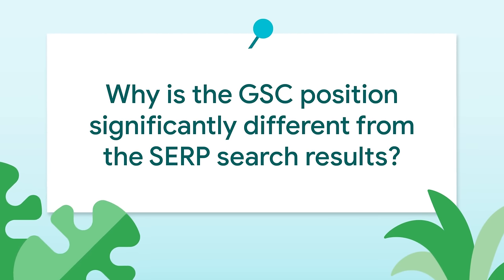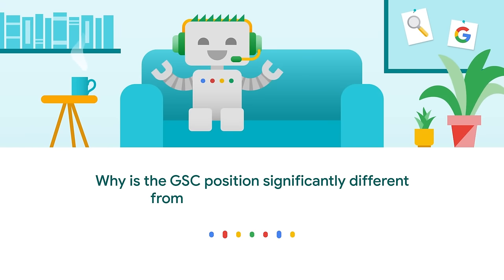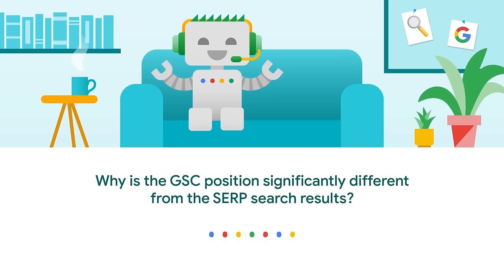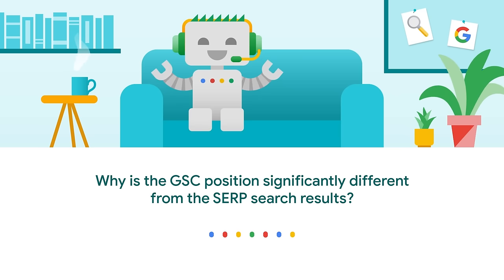Luke asks: why is the GSC, Google Search Console, position significantly different than the SERP search results? Search Console's performance data is not theoretical — it's based on what was actually shown in the search results. However, search can be very dynamic, so it can sometimes be hard to reproduce what was shown. My general recommendation is to try to use filters in Search Console to work out the most likely variation of how it was shown, for example which country, and then try to reproduce it. That said, because of the dynamic nature of search, you might not always be able to reproduce it.